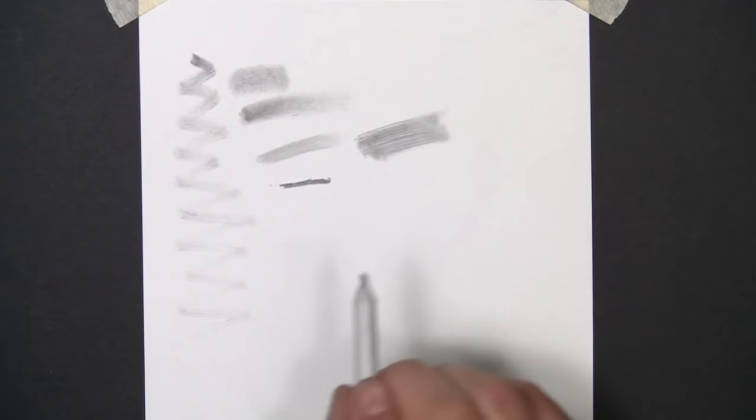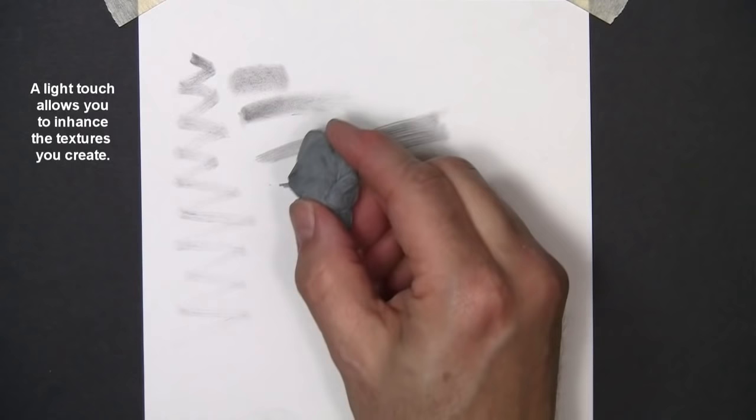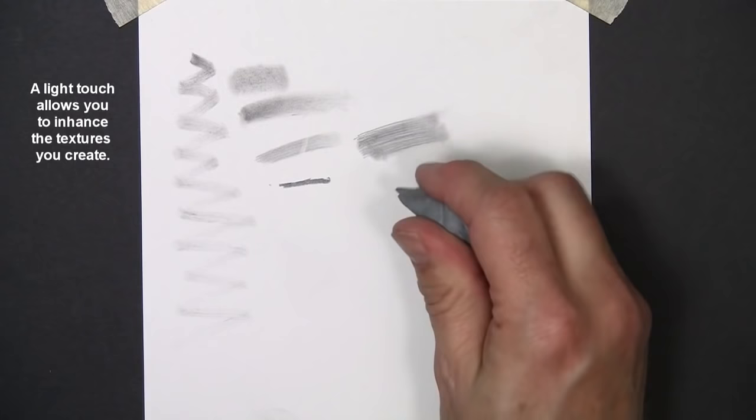Also, using a light touch means that you can manipulate these values later. After they're blended, you'll be able to come in with a kneaded eraser or some of the other erasers I have. If it's done light enough, you'll be able to come back in and manipulate that. If you push down really hard, it's not going to come out nearly as easily.